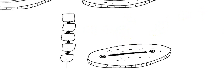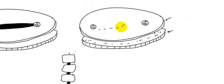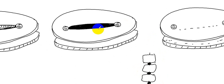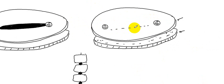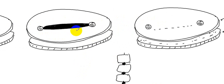Also an important function: the notochord is located between ectoderm and endoderm, in the intermediate layer. This ectoderm on the dorsal surface — on top of the notochord — will form a thickening called the neural plate. So the notochord stimulates the overlying ectoderm to form the neural plate and neural tube. This process is called neurulation. We will discuss this in another video.